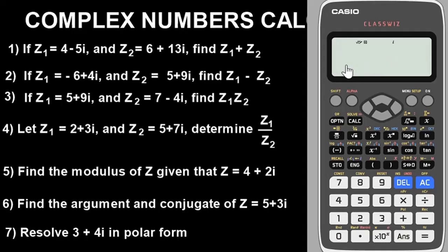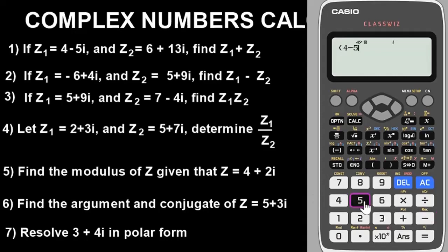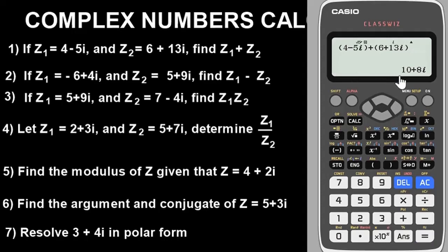Having put it in complex mode, let's solve question one. Question one says: if z1 equals 4 minus 5i and z2 equals 6 plus 13i, find z1 plus z2. I recommend solving it with brackets. Open brackets for z1: 4 minus 5i, use the ENG button to bring out the i, close the brackets, put the plus sign, open brackets for z2: 6 plus 13i, close the brackets. The answer is 10 plus 8i.